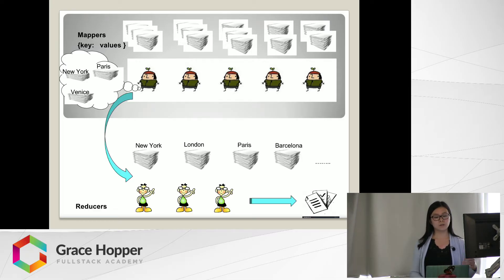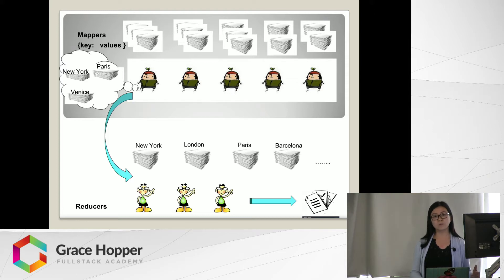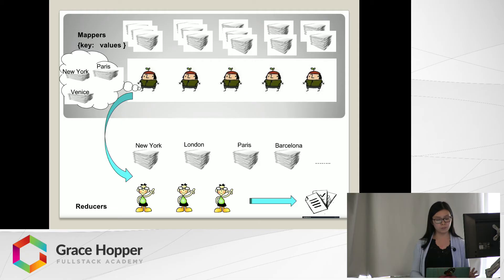After the reducers finish consolidating, they process the data — in our case, calculating the total sales from each city. They calculate the sales revenue from each city, New York, London, one by one, and generate the report. We can see that each mapper works on a small chunk rather than a huge task, and they work in parallel, which is very efficient and much faster. Their task is to map all the data into key-value pairs — in our case, the key is the name of the city and the value is the transaction data for that city. For reducers, they get all the data and combine all values with the same key, then process the data accordingly.